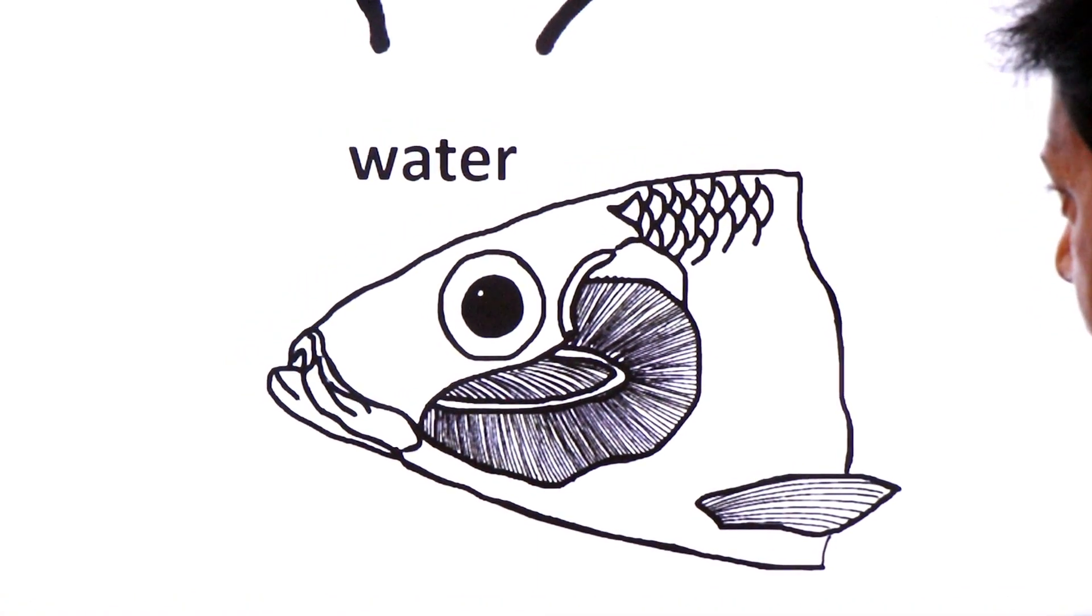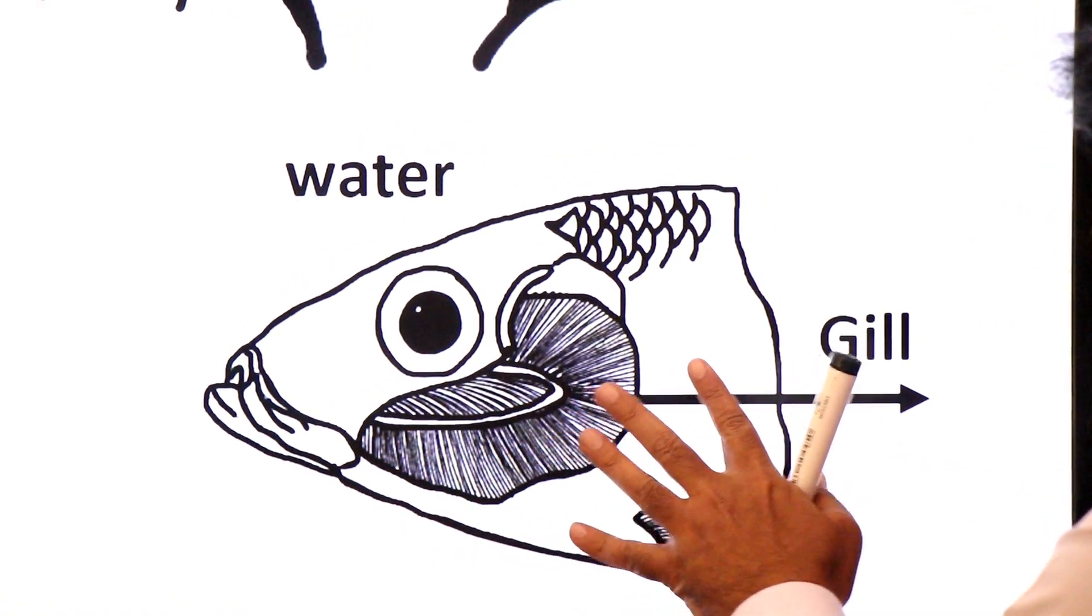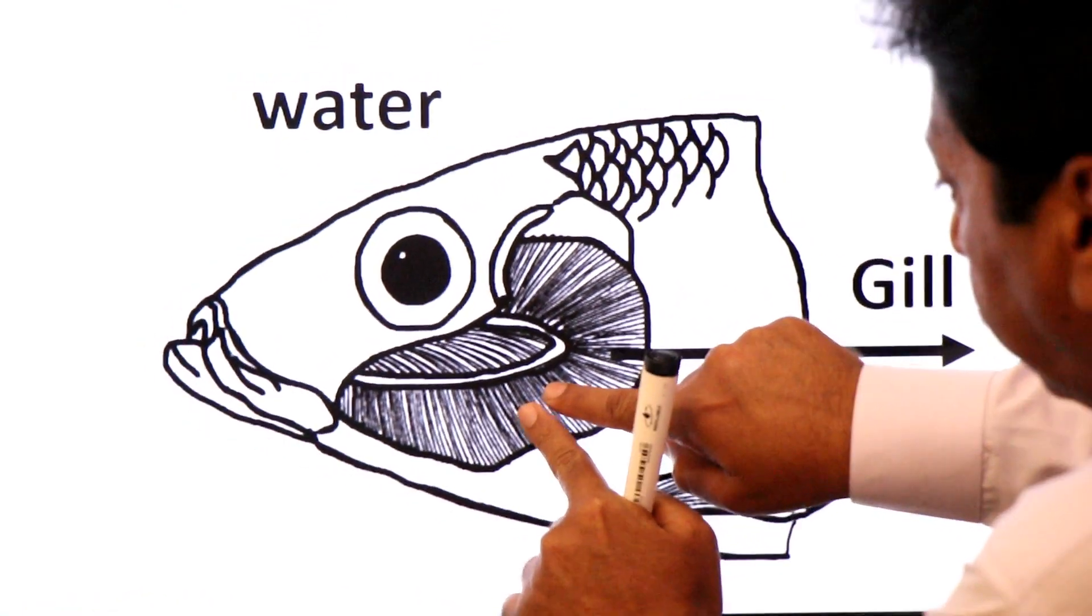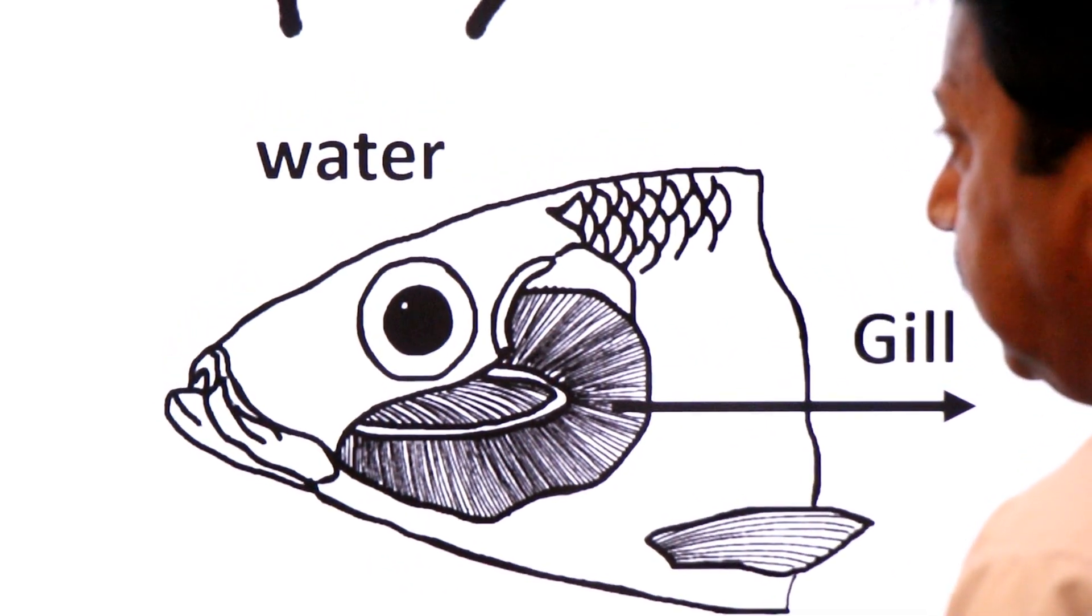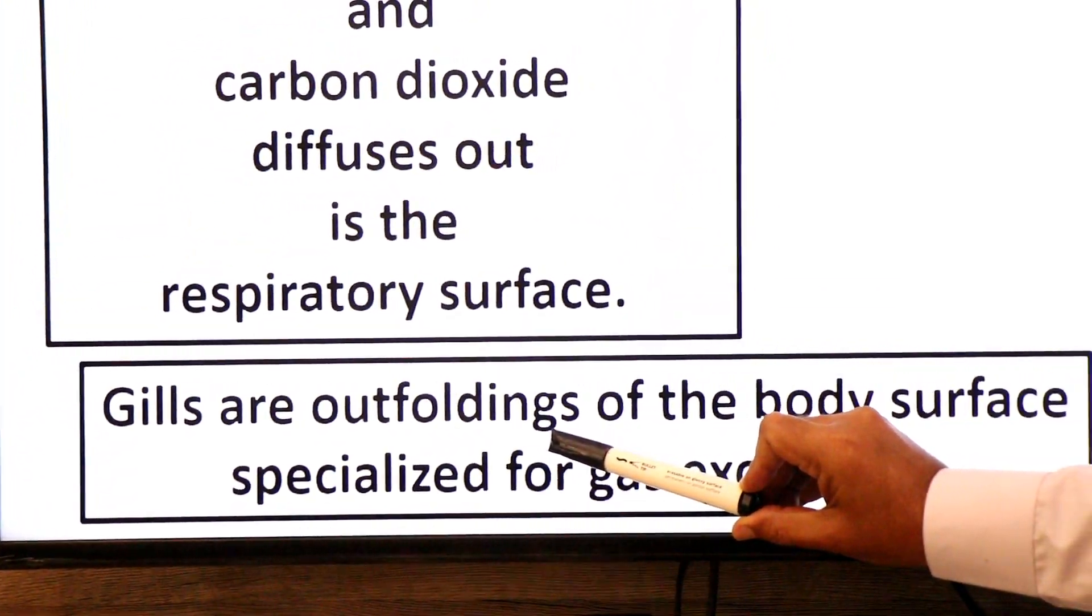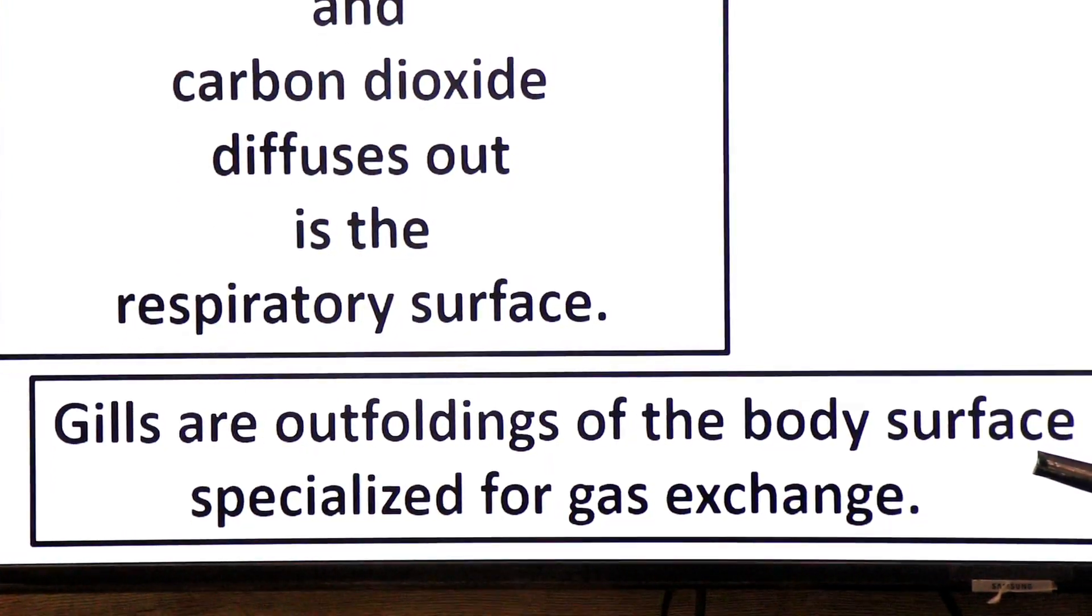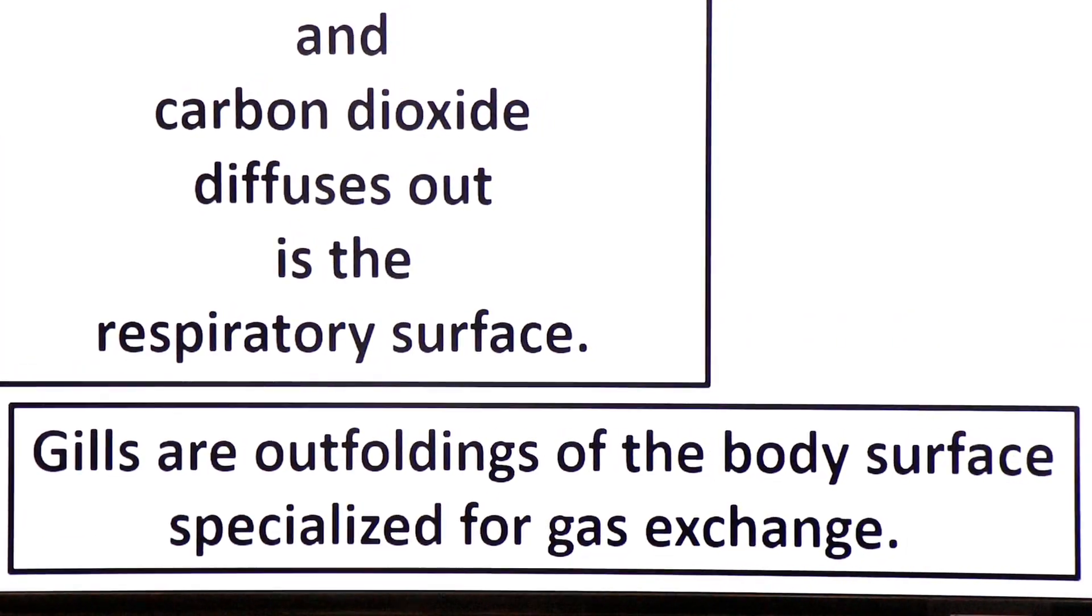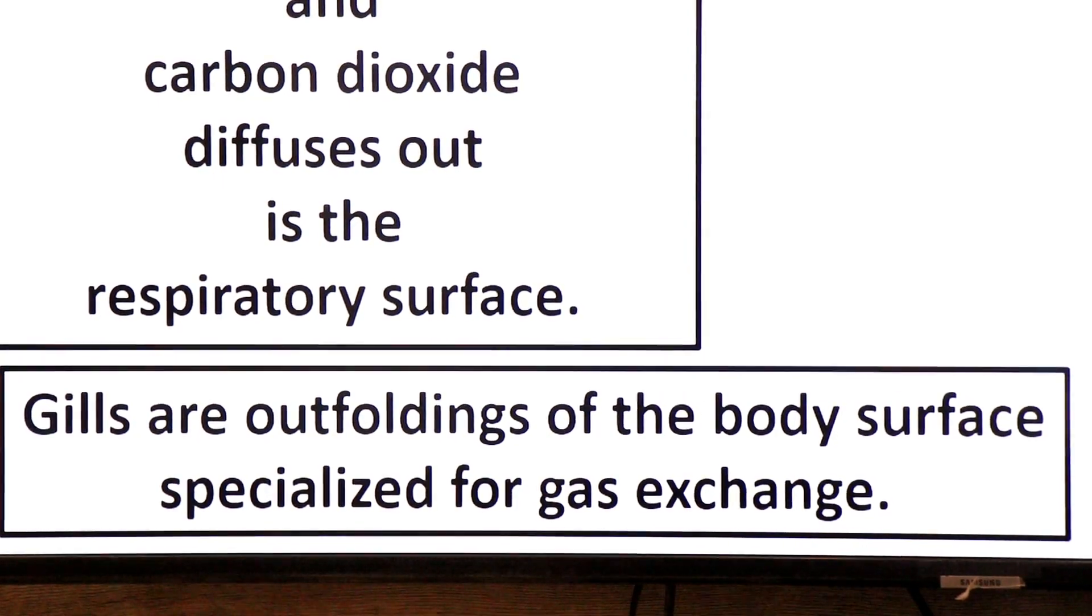Here you see the diagram of fish and its breathing organ, its gaseous exchange organ. Dear students, you know this is called gills. A fish living in water - here you see its breathing or gaseous exchange organ known as gill. In the gill, dear students, there are gill filaments which serve as the respiratory surface for exchange of gases. Gills are outfoldings of the body surface specialized for gas exchange. In fishes, gills are outfoldings of the body, a specialized surface for gas exchange in water.